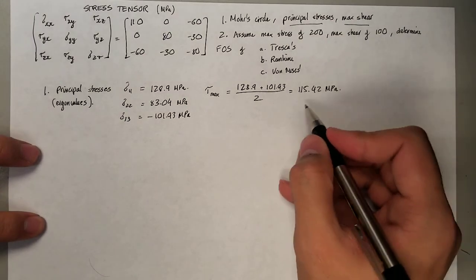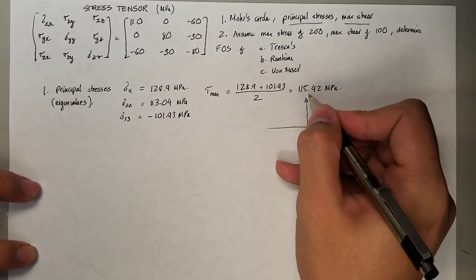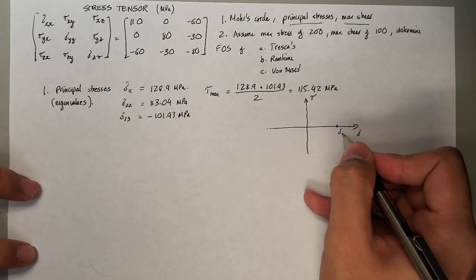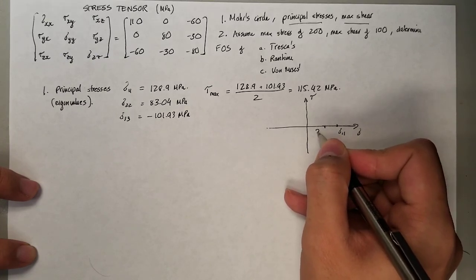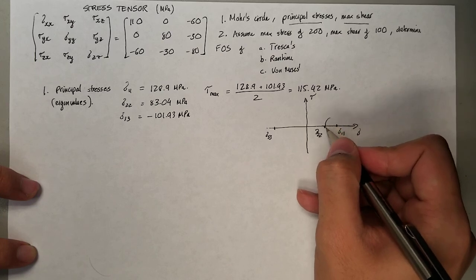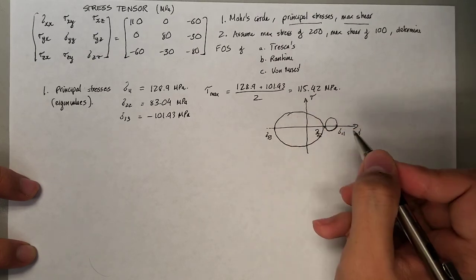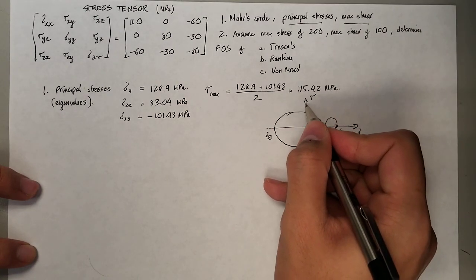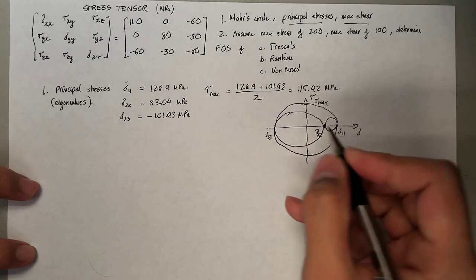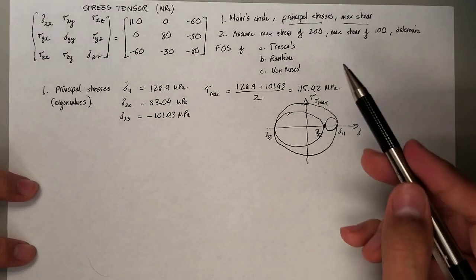Now you want to draw the Mohr's circle. The vertical axis is the shear stress, and you plot the first principal stress σ₁₁, the second σ₂₂, and the third σ₃₃. You draw circles joining between the first and second, and the second and third. The maximum shear is represented by the largest circle joining σ₁₁ and σ₃₃.